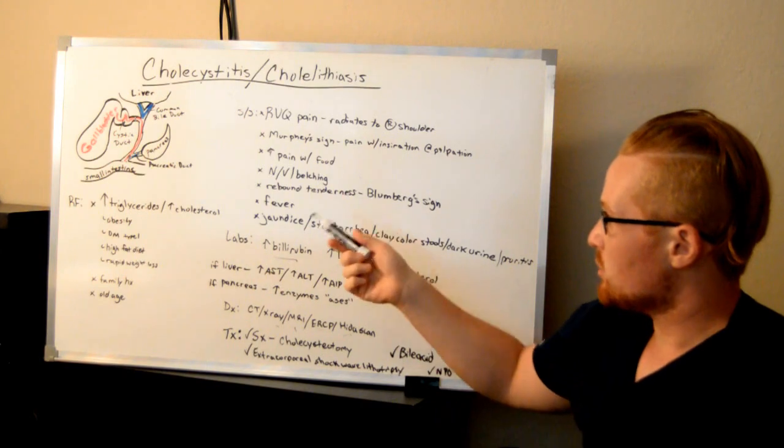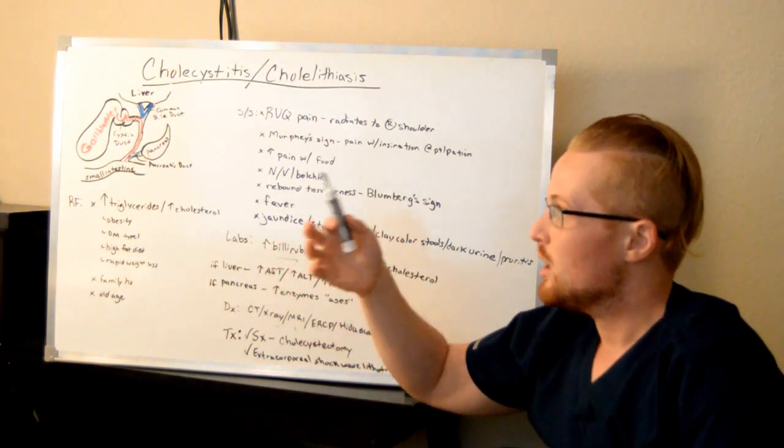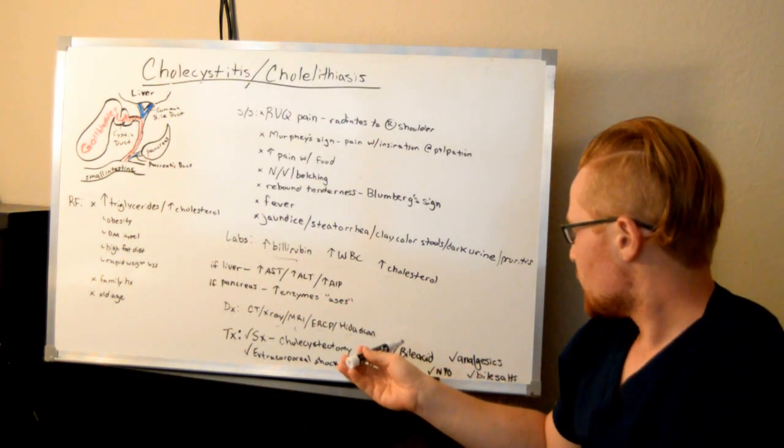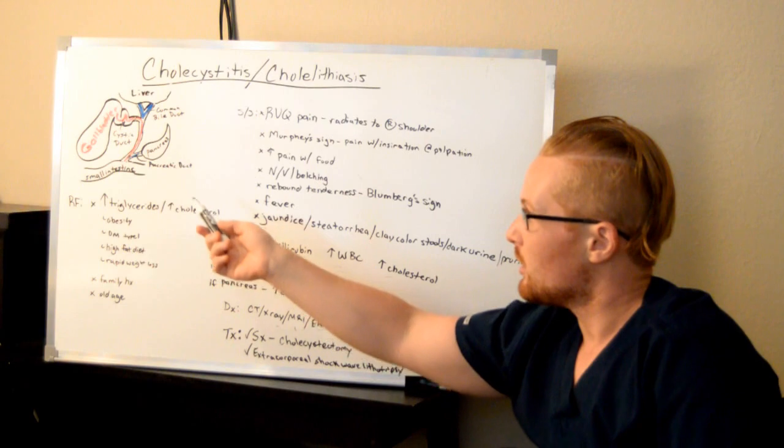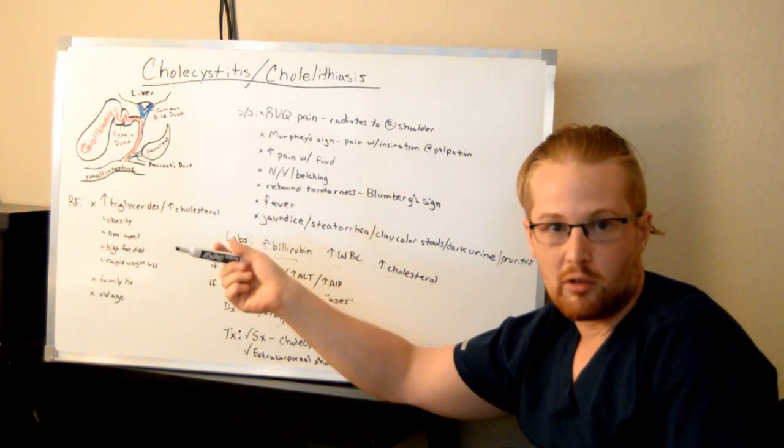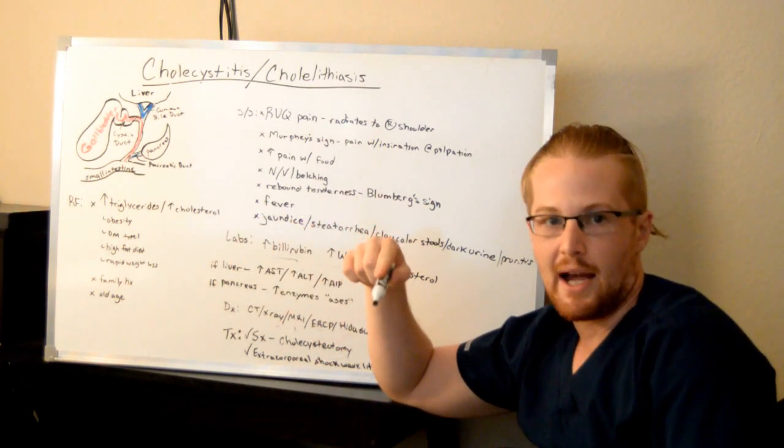You also are going to have this patient NPO so that way the bowel has time to rest, and giving them pain medications in the meantime. And after discharge, if they do have the gallbladder removed, you'll need to give them synthetic bile in bile salt form, so they can digest their fats. And you'll also want them to be on a low-fat diet after discharge.